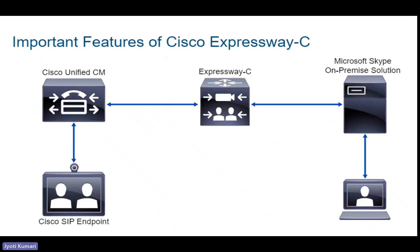One of the most important features of Expressway is its ability to integrate standard as well as non-standard, third-party devices, ensuring that collaboration is not restricted to a single vendor. For example, Expressway C can integrate and transport communication to allow SIP devices to communicate with Microsoft Skype for Business clients, which use Microsoft-specific extensions of the SIP protocol.